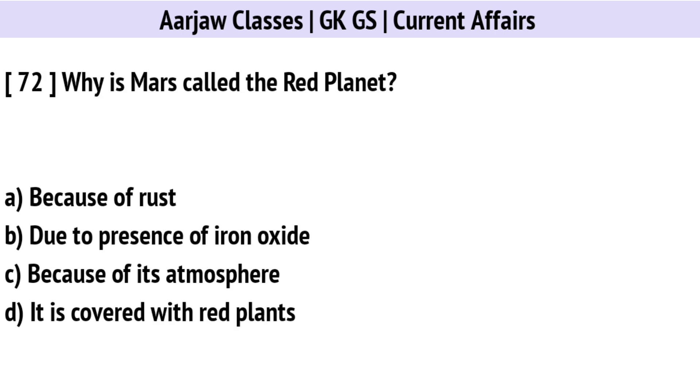Why is Mars called the red planet? Correct option is B: Due to the presence of iron oxide.